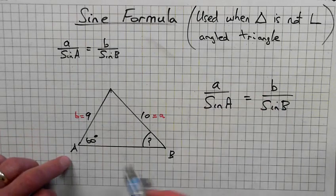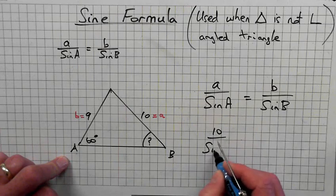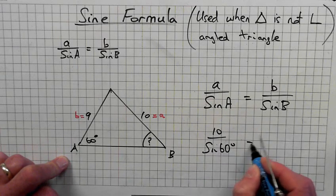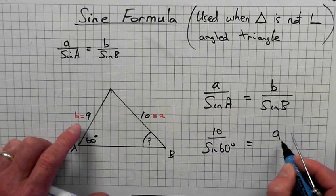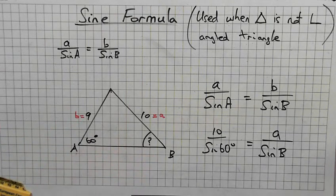Right, so a is 10 over sine of 60, and then side b is 9 over sine B. That's a 9, alright.